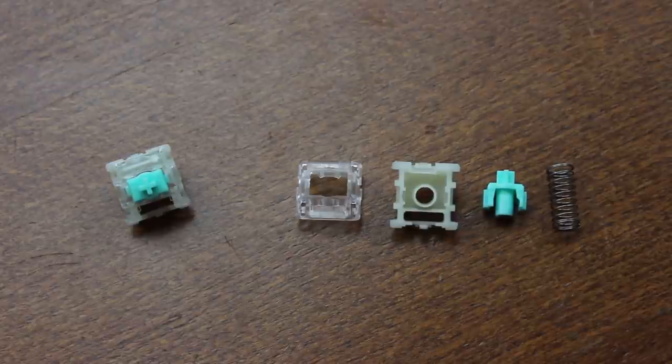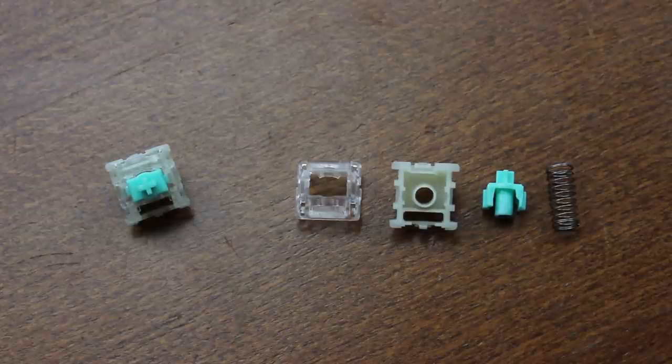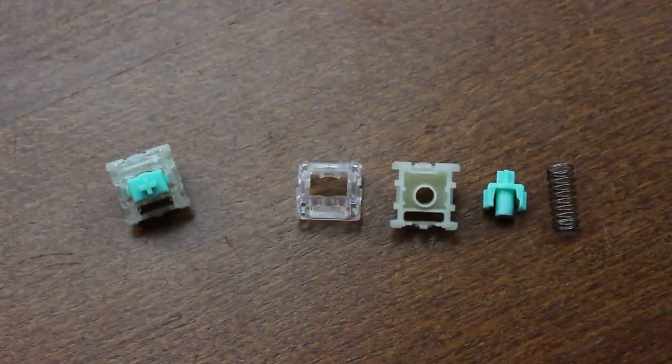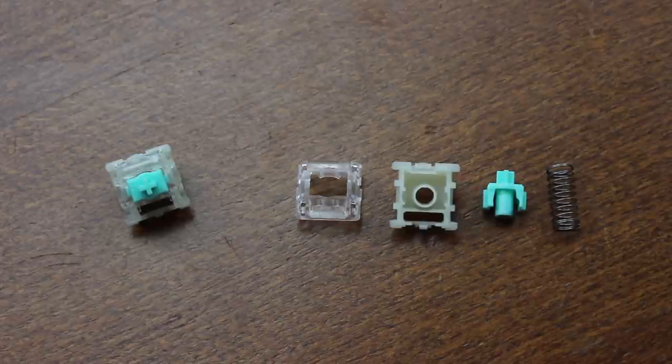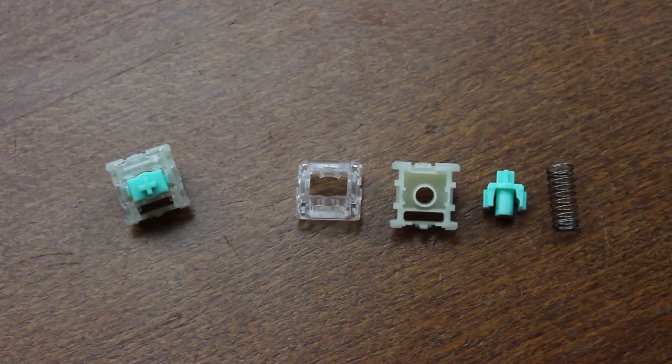The switch consists of five parts: two parts of the housing, the slider, the magnet, and the coil spring. That's it for this video. Some more history details and an actual review will be presented during the review of the actual keyboard. For now, I hope you enjoyed the video and see you next time.